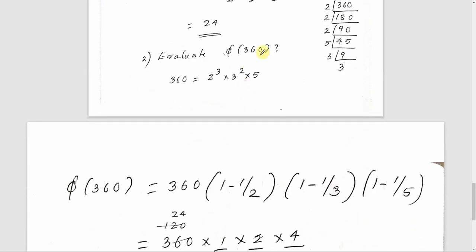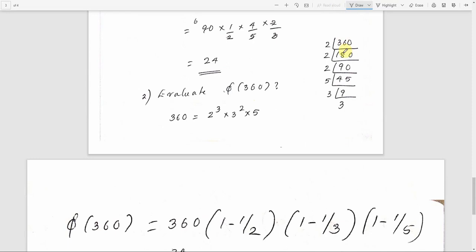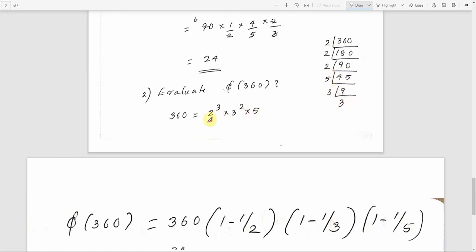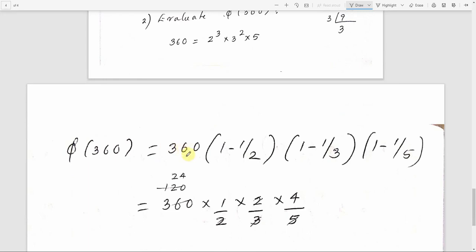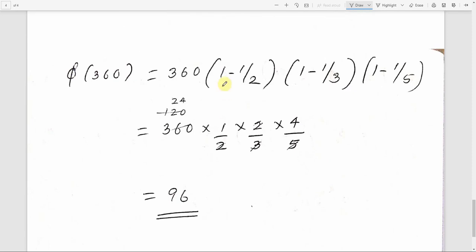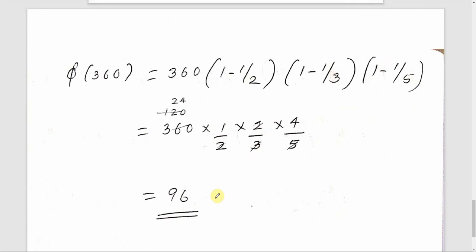Another example: phi of 360. The prime factorization of 360: divide by 2 to get 180, divide by 2 to get 90, divide by 2 to get 45, divide by 5 to get 9, divide by 3 to get 3. So 360 equals 2 raised to 3 times 5 raised to 1 times 3 raised to 2. Applying the formula: phi of 360 equals 360 times (1 minus 1 by 2) times (1 minus 1 by 3) times (1 minus 1 by 5), which equals 360 times 1/2 times 2/3 times 4/5, giving the answer 96. That is all for Euler's totient function. Euler's theorem will be discussed in the next video. Thank you.